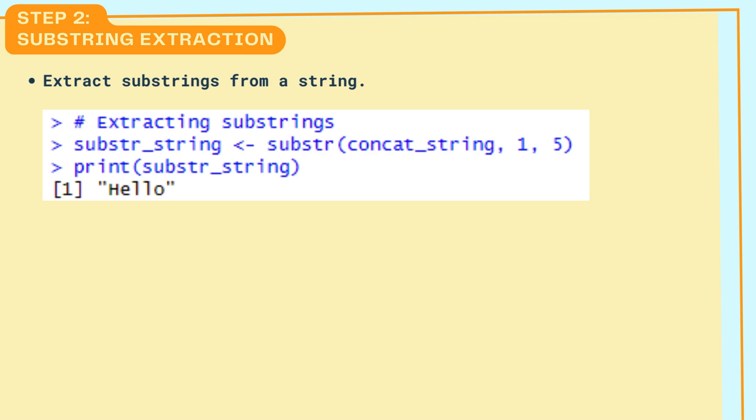Step 2: Substring Extraction. Extract substrings from a string. We use the substr function to extract the first 5 characters from the concatenated string.